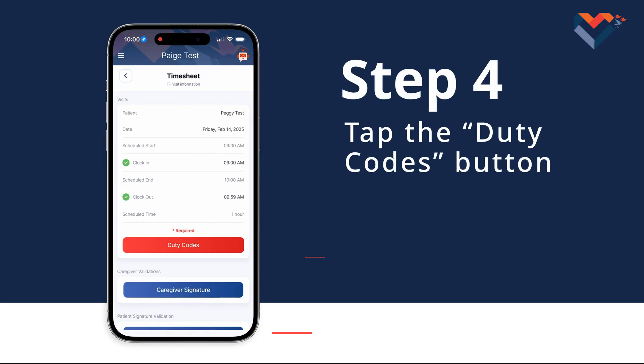Step 4. The next screen will bring up your daily timesheet. It will show you all the information related to your visit, including the patient's name, date, scheduled start and end times, and your clock in and clock out times. It will also include a button for duty codes. Go ahead and tap it.